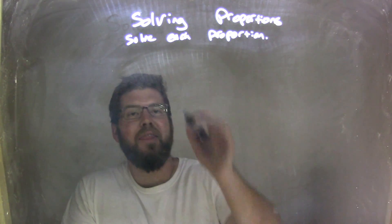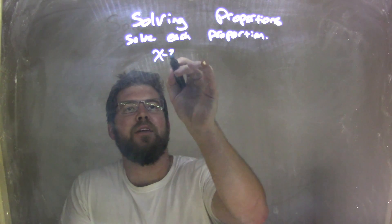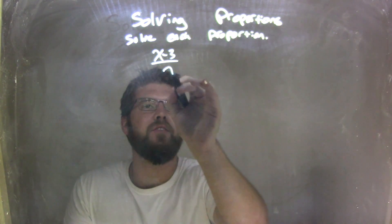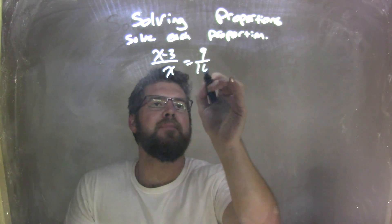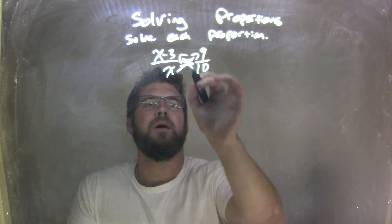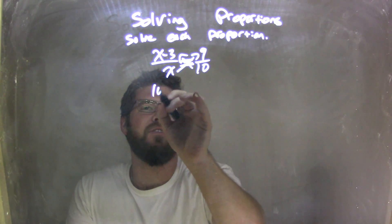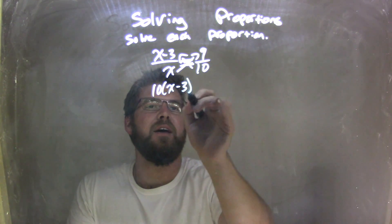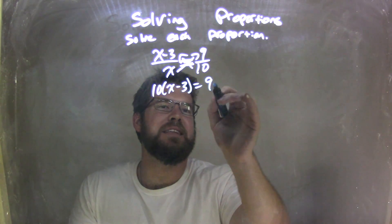If I was given this proportion, x minus 3 over x equals 9 over 10, I'm going to cross-multiply. Boom, boom. 10 times x minus 3 equals 9 times x, which is 9x.